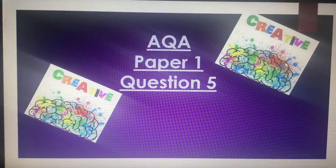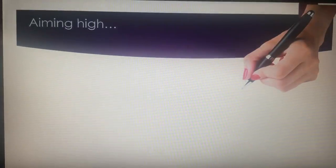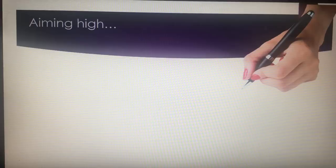Welcome to your video on AQA Paper 1, Question 5. It's going to take you through how to get a Grade 7, a Grade 8, and a Grade 9. At the end of the video, I'm going to show you some example paragraphs that I've written that would get a Grade 9 and explain how.